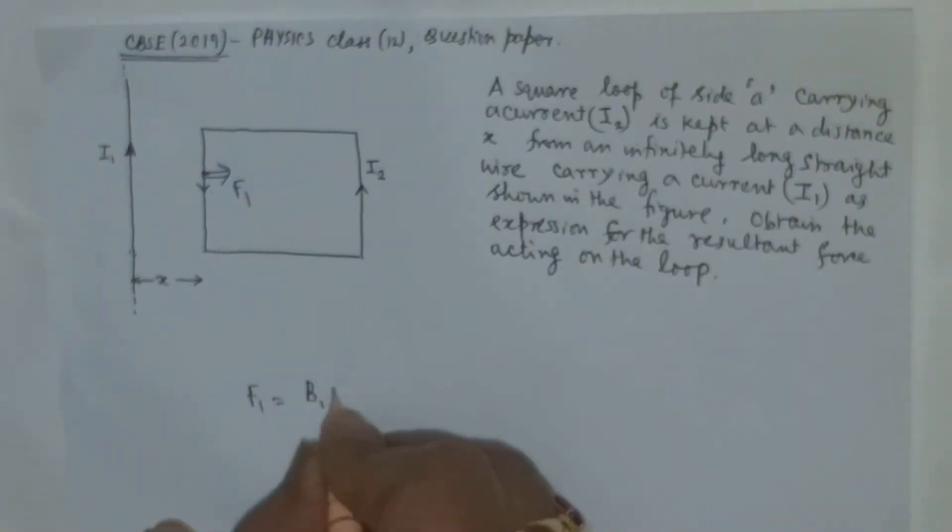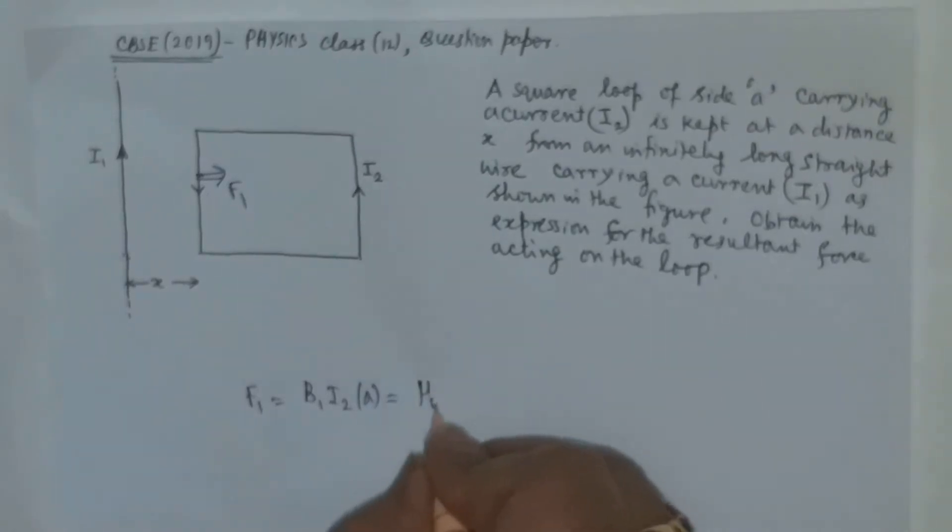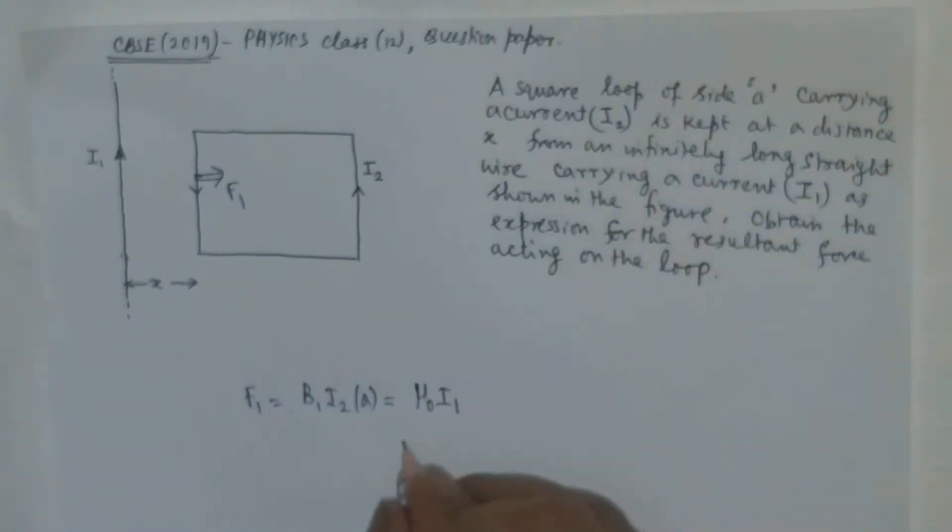So what is F1? It will be B1 into I2 into the length of the conductor, which is A. That is μ₀I1 divided by 2πx into A.